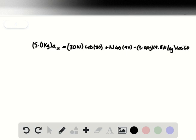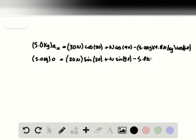The second equation is very similar: (5.0 kg)(0) = (30 N)sin(30°) + N·sin(90°) - (5.0 kg)(9.8 N/kg)sin(60°). We can see a commonality between the terms of the two equations.